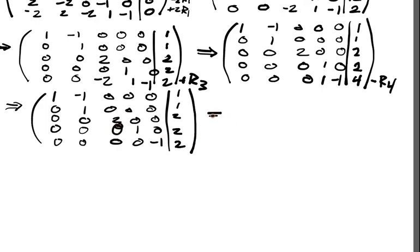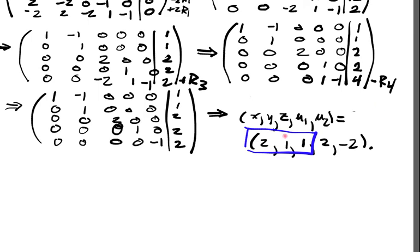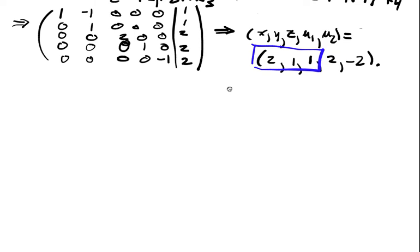and we can immediately read off what is the critical point, right? So we're going to have that, well, x, y, z, mu1, mu2 is going to be equal to 2, 1, 1, 2, -2. And this is really, this part right here is really what we're interested in. And that's going to be our critical point, and that's potentially where the optimization point is, right?